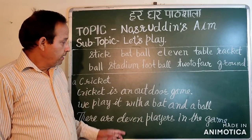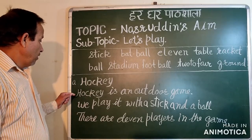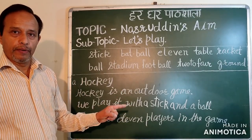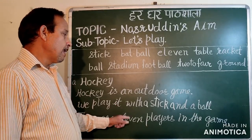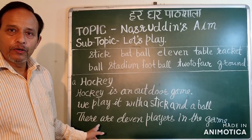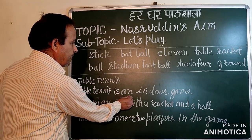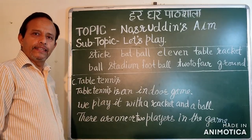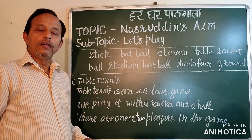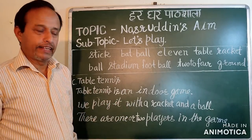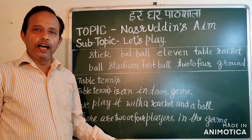Our next game is Hockey. Hockey is an outdoor game. We play it with a stick and a ball. There are 11 players in the game. Next game is Table tennis. Table tennis is an indoor game. We play it with a racket and a ball. There are two or four players in the game.